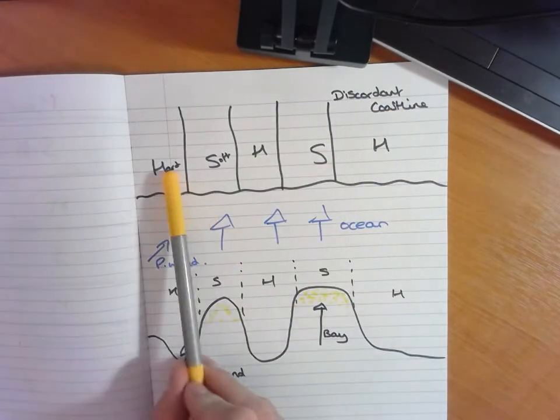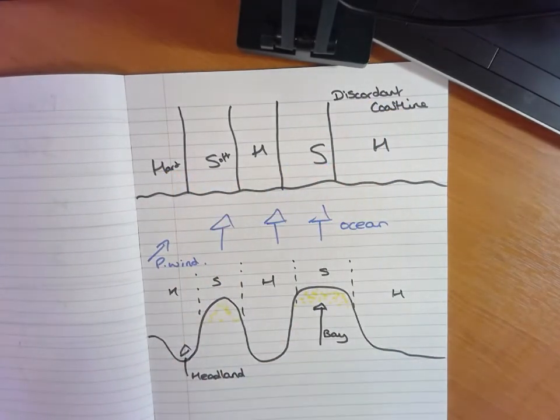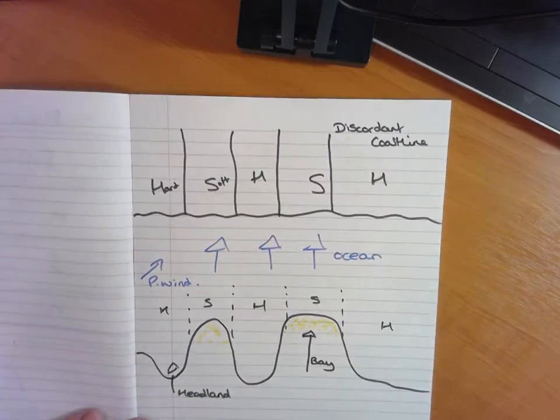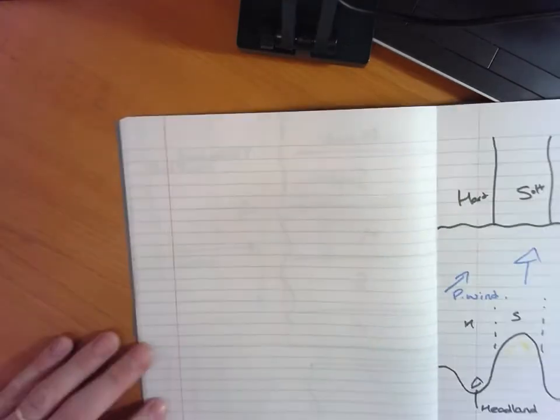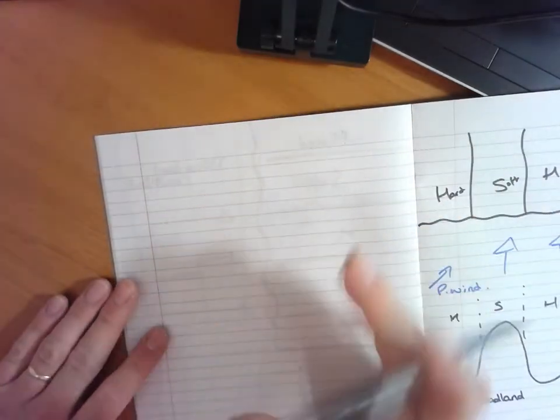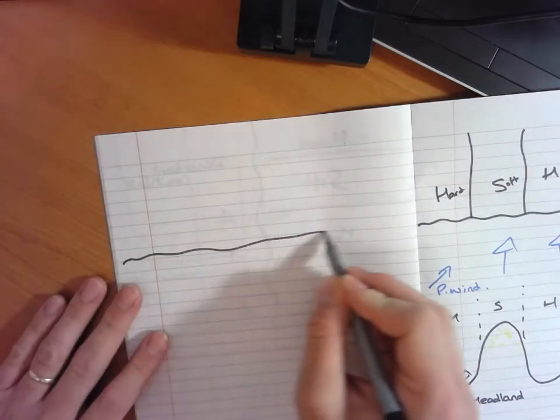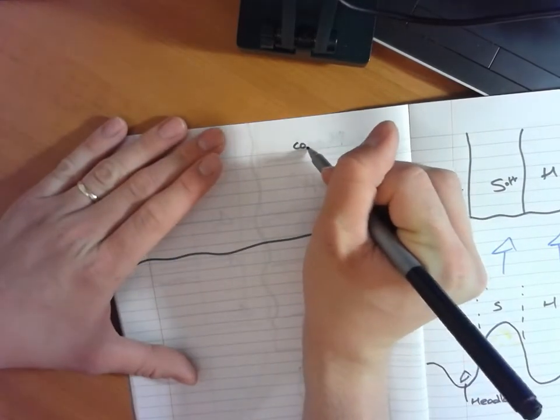That is where we're seeing these bands of harder and softer rock. Now if I was to make those bands parallel and slide this over just here. If I was to make those bands parallel and do it slightly differently on a concordant coastline. So if I put the title here concordant.